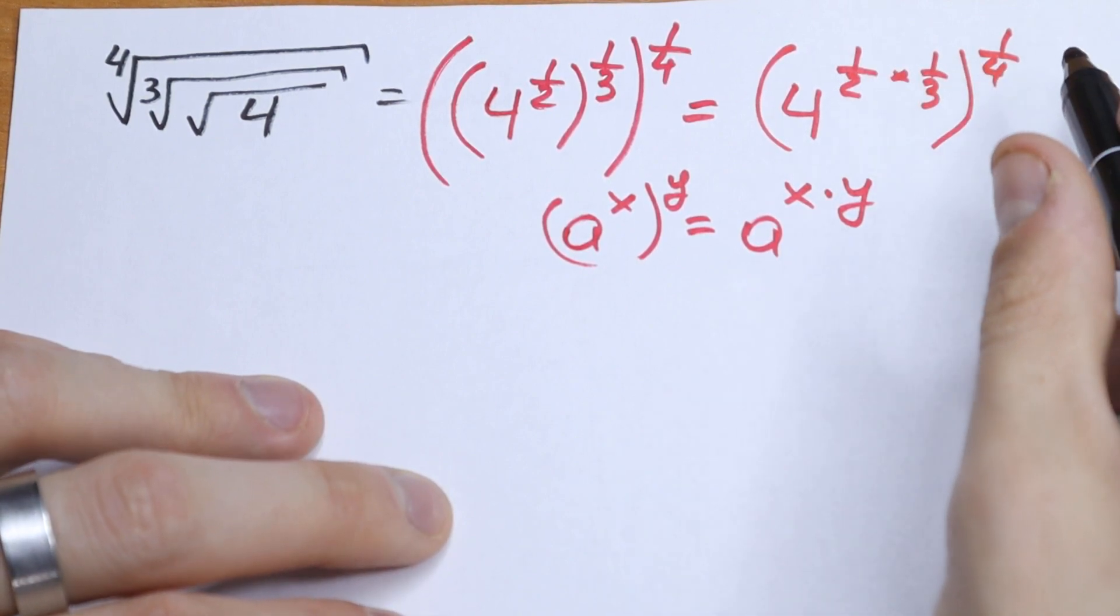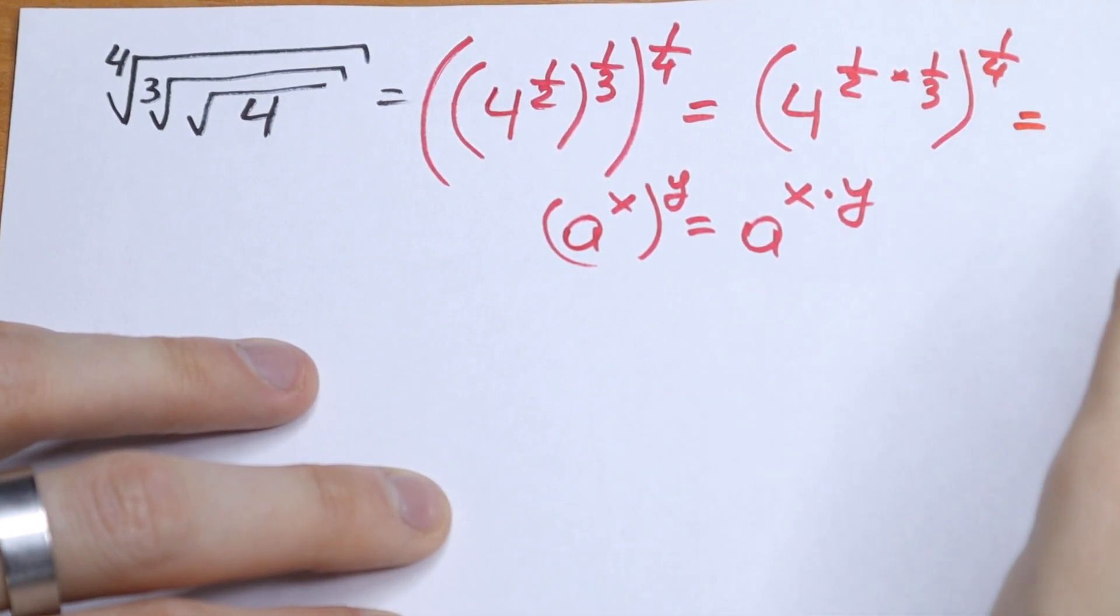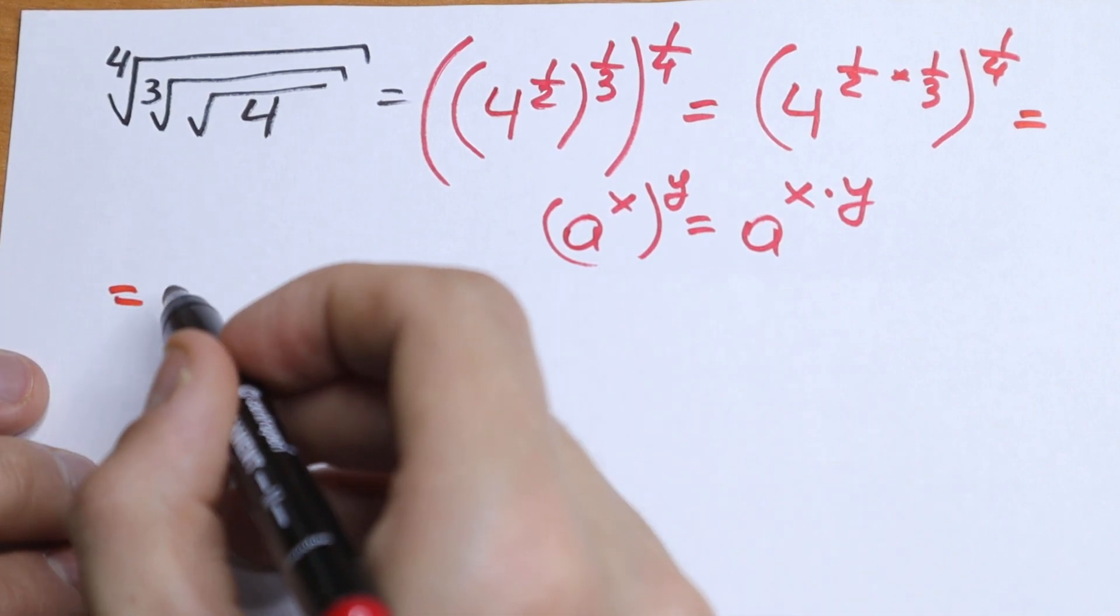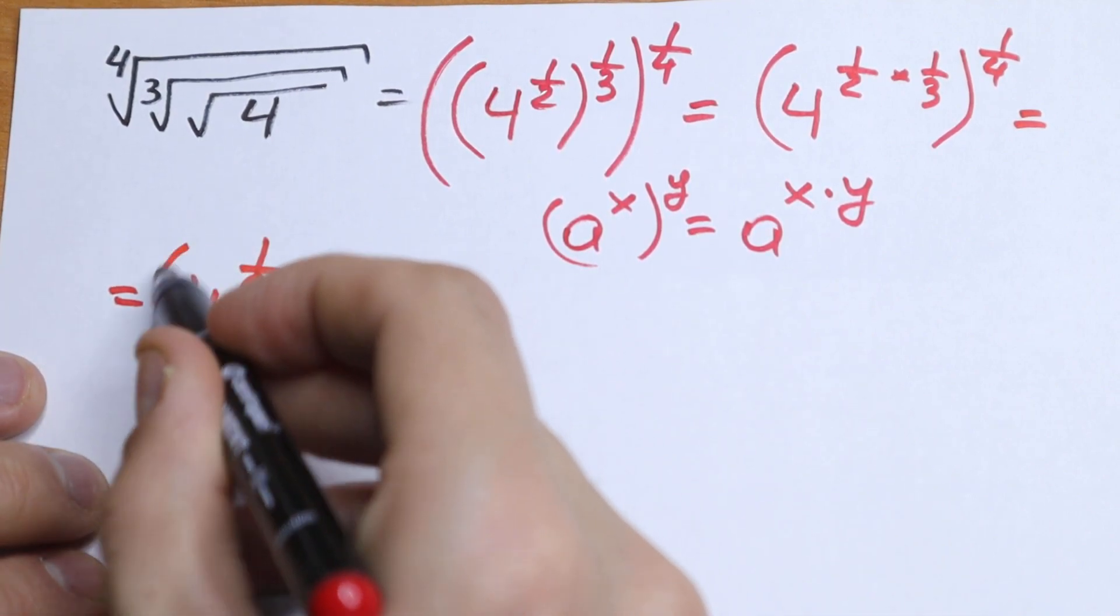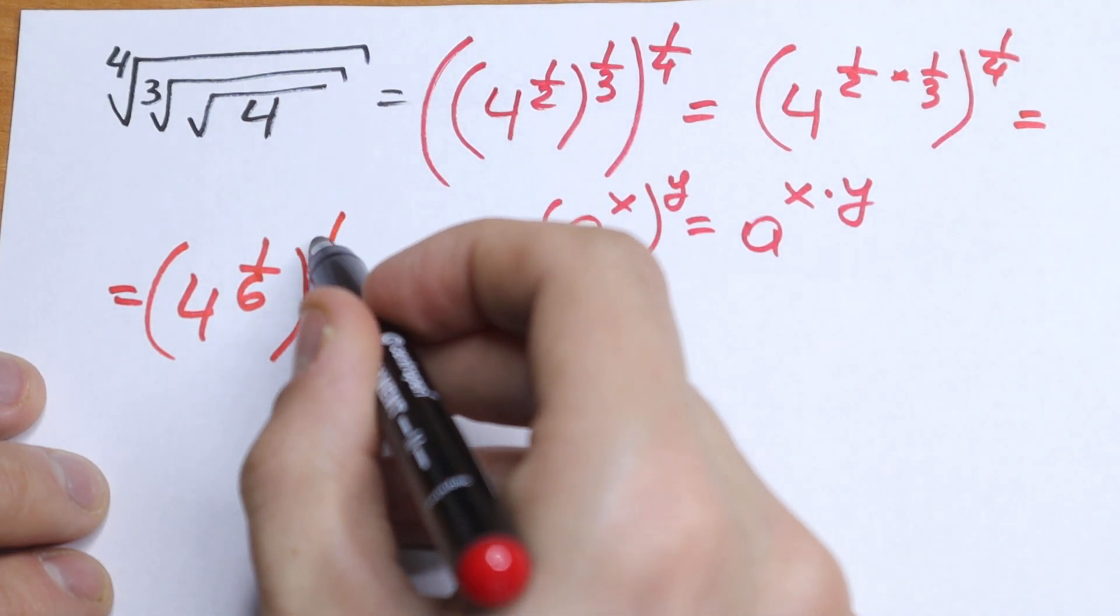Multiplying one half times one third, it will be one over six. What we will have? 4 to the power one over six raised to the power one over four.